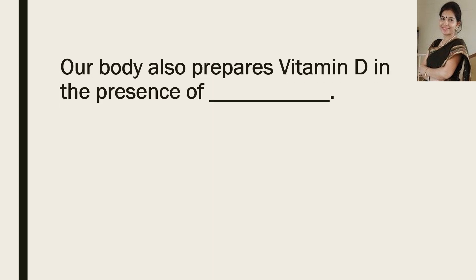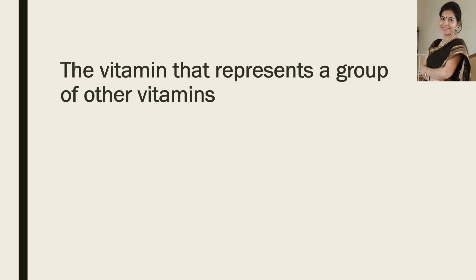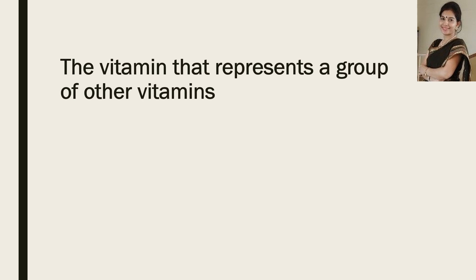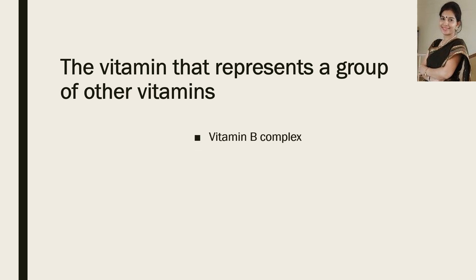Our body also prepares vitamin D in the presence of what? And the answer for this question is sunlight. Now the next question: the vitamin that represents a group of other vitamins. The answer is vitamin B complex.